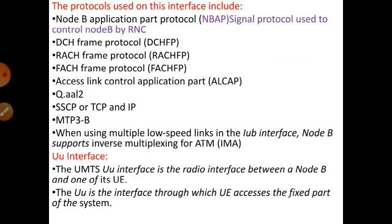Apart from this, we finish the third interface, and the fourth one will be the UU interface. The UU interface is a radio interface connected between the Node B and the user equipment — meaning you can connect one user equipment along with one Node B station. This UU interface is interfaced through the UE. The UE can access the fixed part of the system. The best example of a UE interface will be the router.